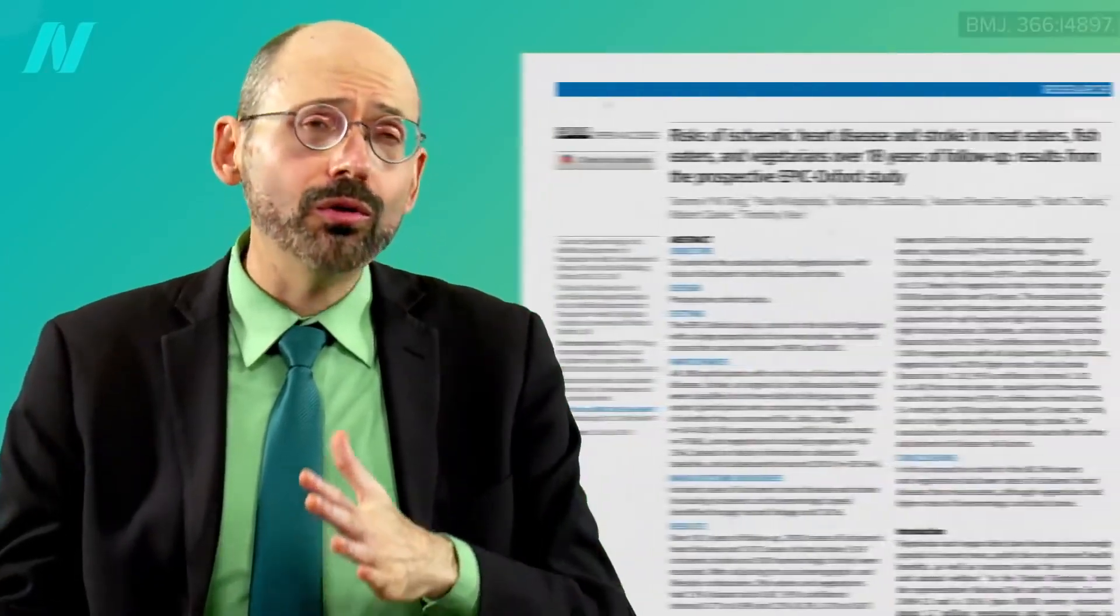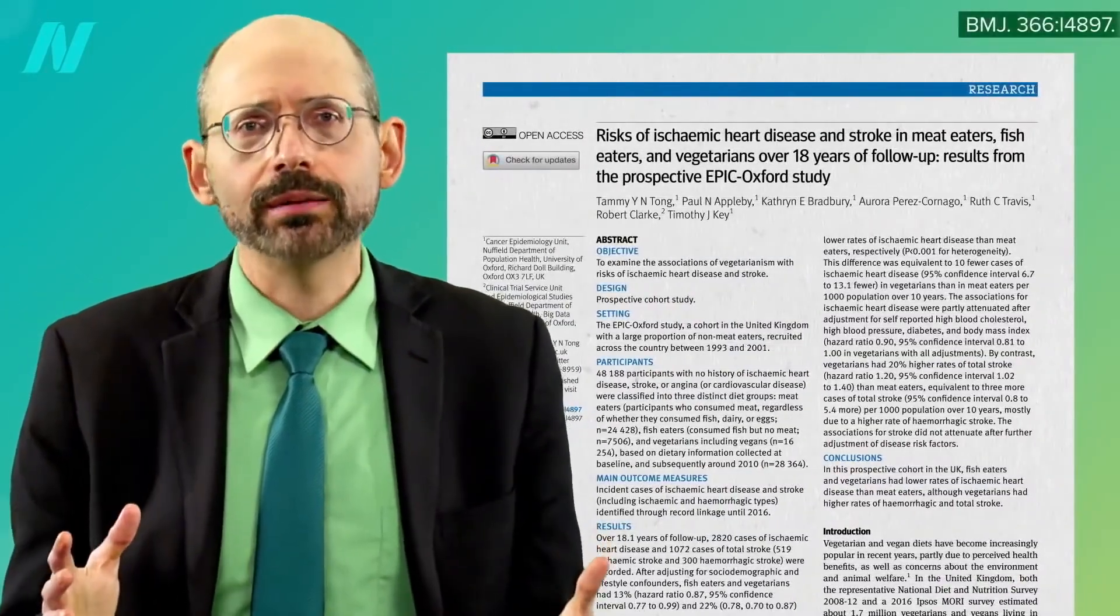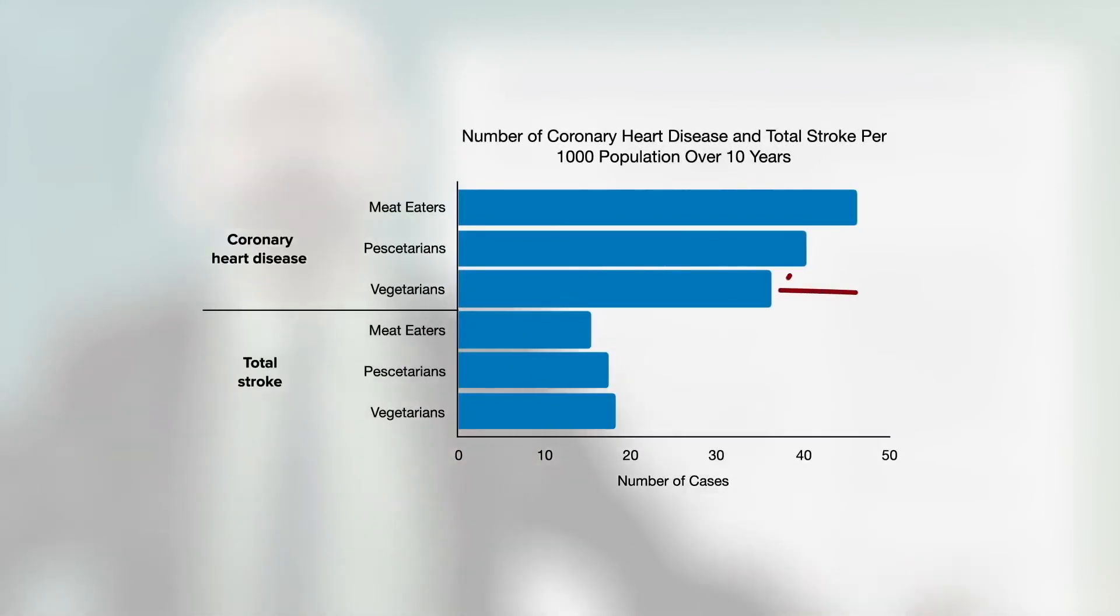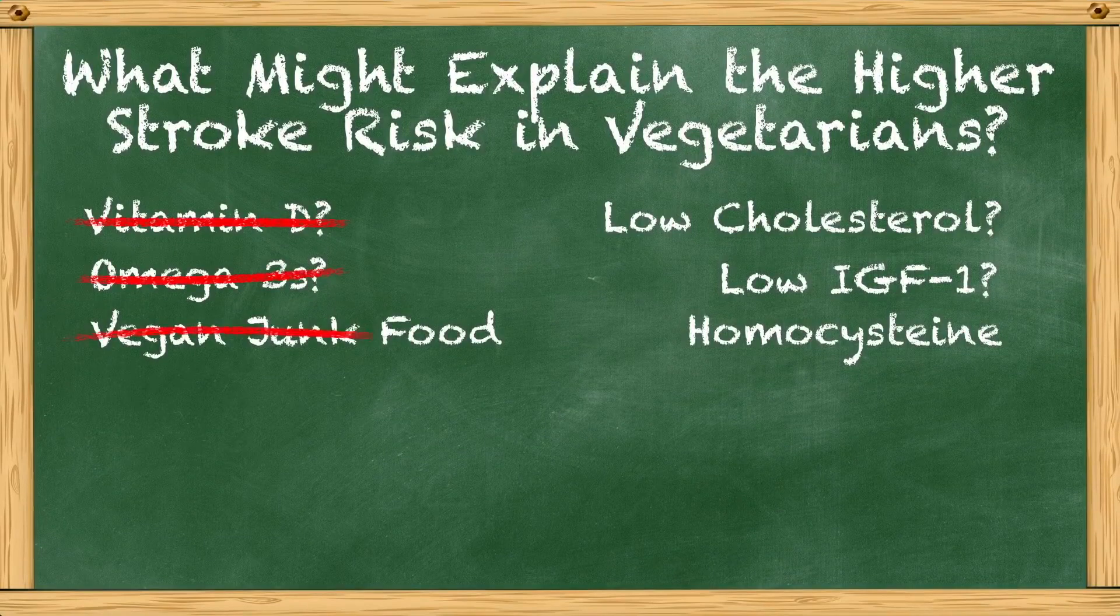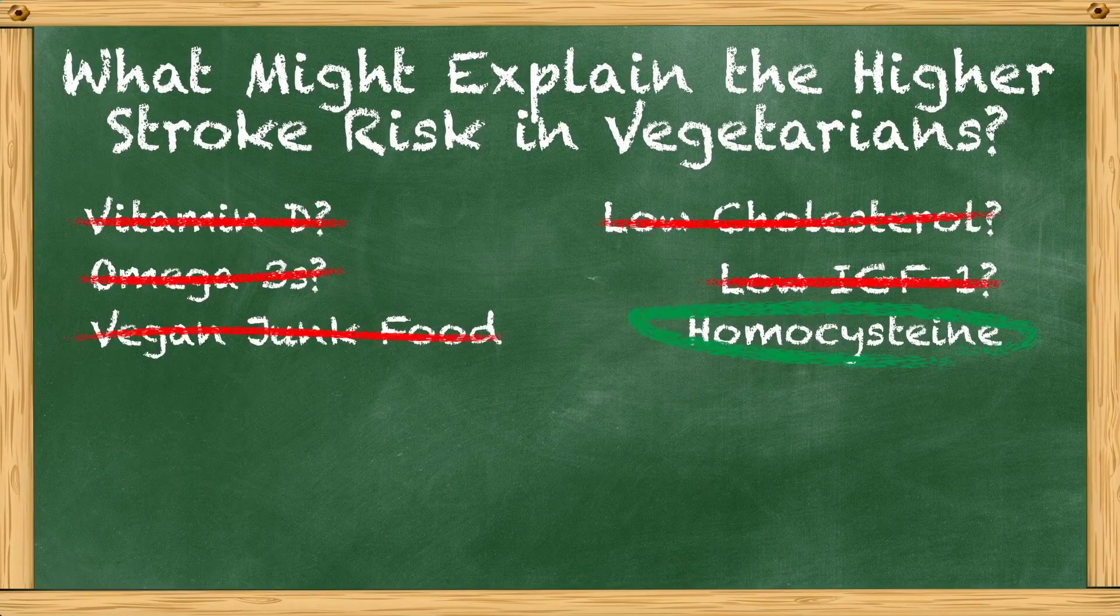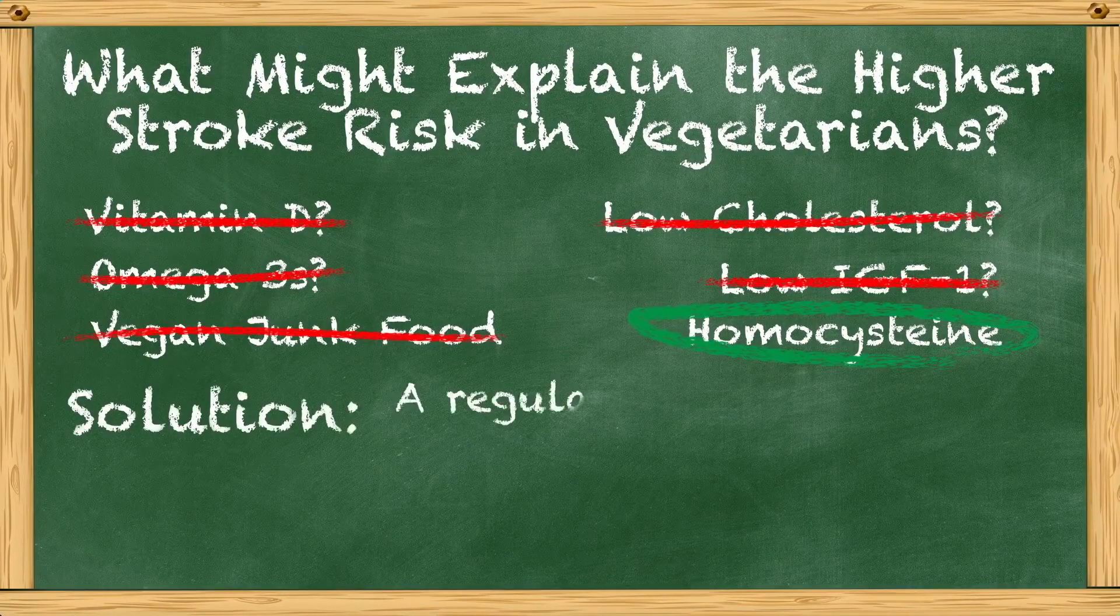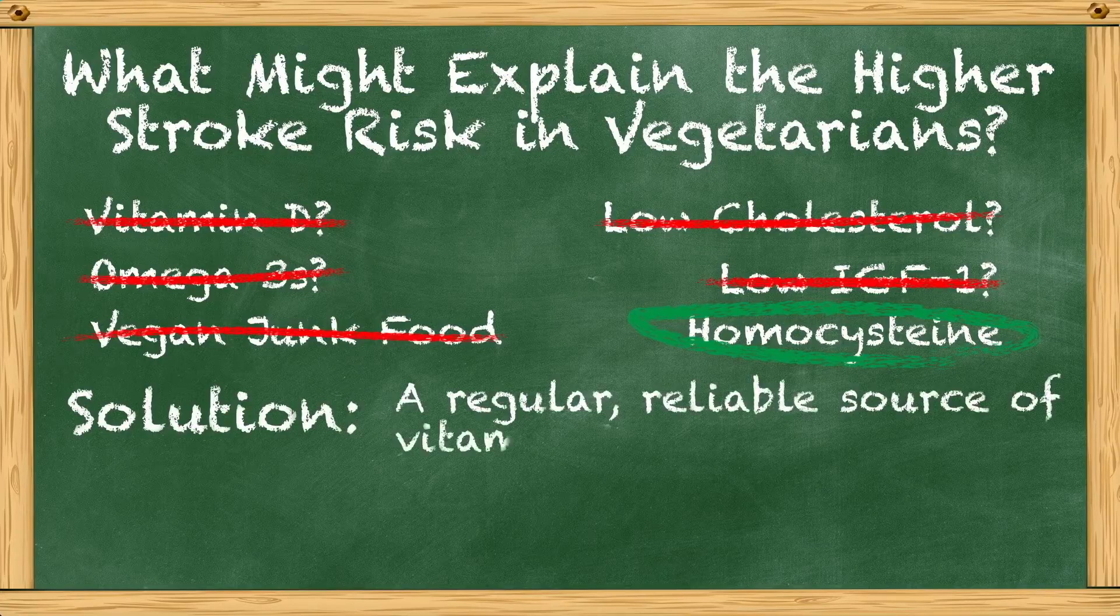The reason I did this whole video series all goes back to this study, which found that although the overall cardiovascular disease risk is lower in vegetarians and vegans combined, they appeared to be at slightly higher stroke risk. I went through a list of potential causes, arrived at elevated homocysteine, and the solution? A regular, reliable source of vitamin B12.